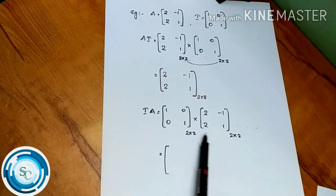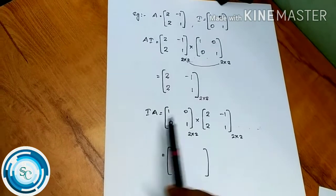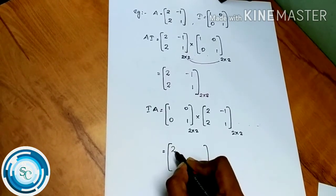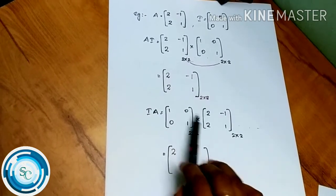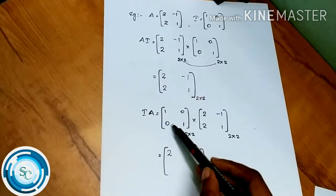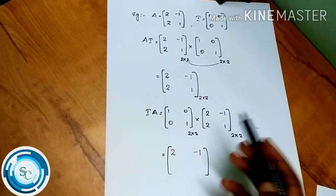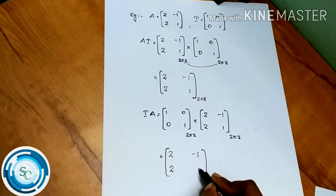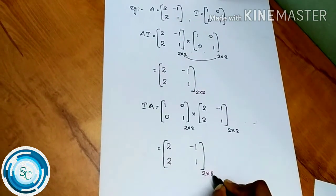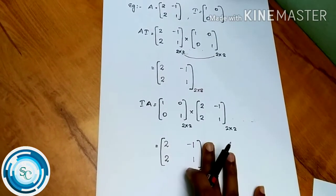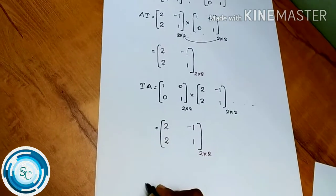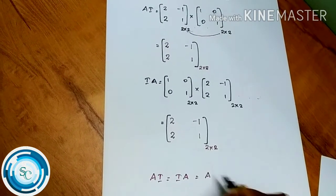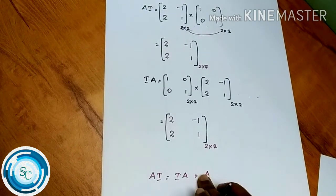Now we multiply. We get: 1×2 + 0×2 = 2; 1×(-1) + 0×1 = -1; 0×2 + 1×2 = 2; 0×(-1) + 1×1 = 1. The result is a 2×2 dimensional matrix. So A·I = I·A = A for any square matrix A.